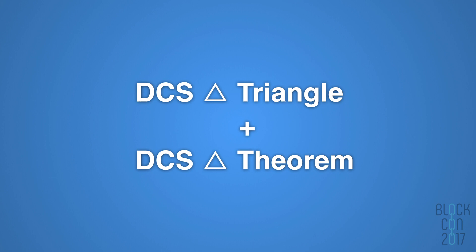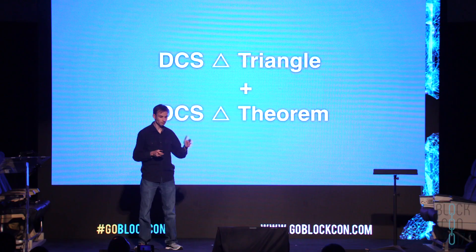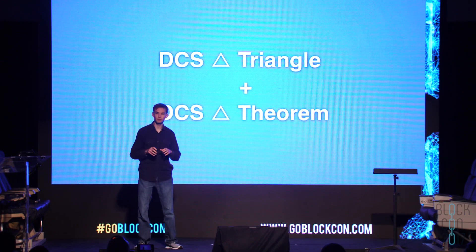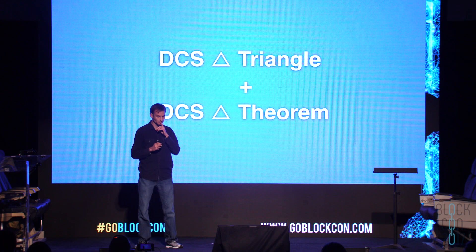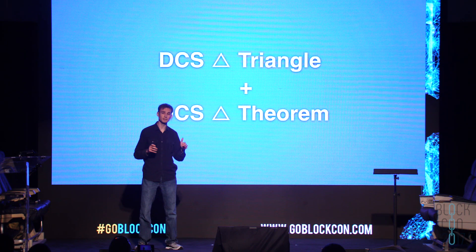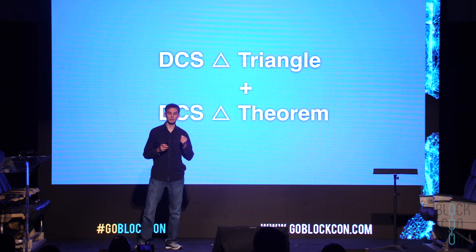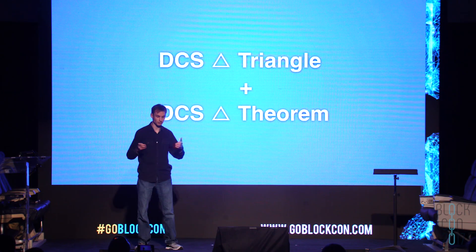This brings us to the DCS triangle, which was independently discovered by myself and Trent McConaughey. He found out about it first and wrote an excellent blog post on the BigchainDB blog. Recently I published something called the DCS theorem, which tries in a mathematical way to prove that decentralized consensus systems are likely to centralize — it's a probability proof. It doesn't say they're guaranteed to centralize, but that they're likely to as a decentralized consensus system gains users and scale.